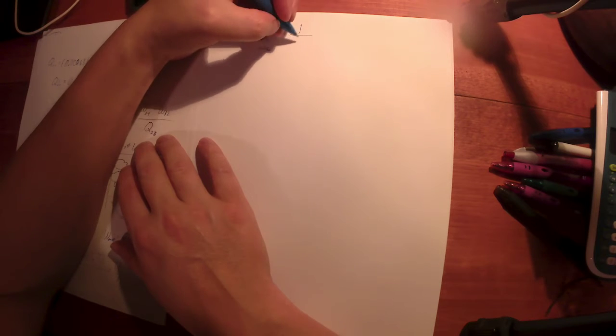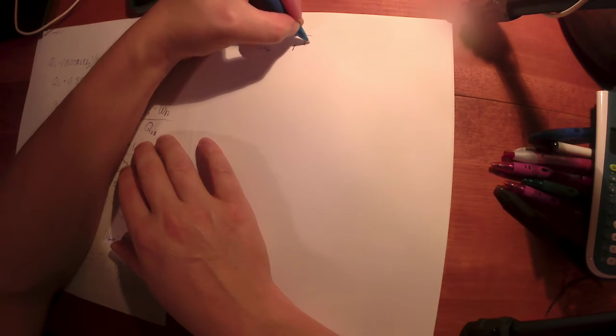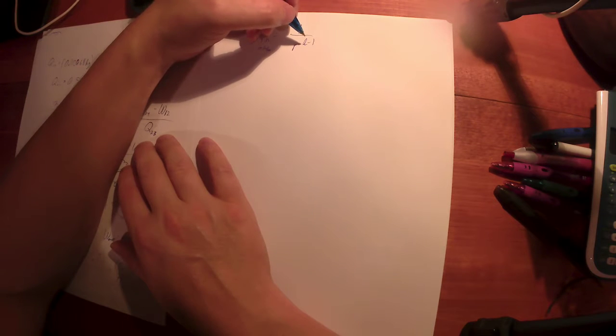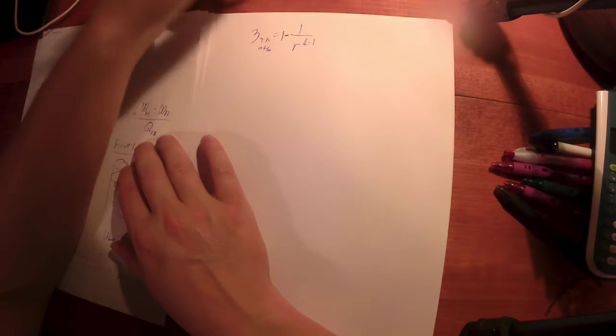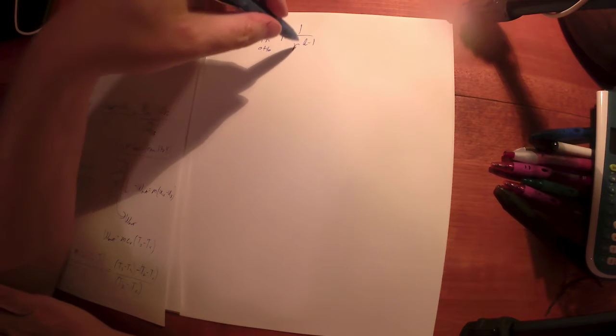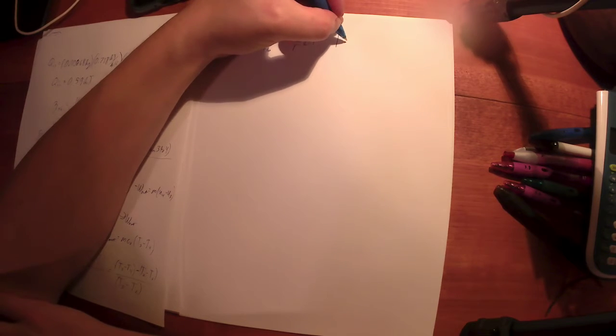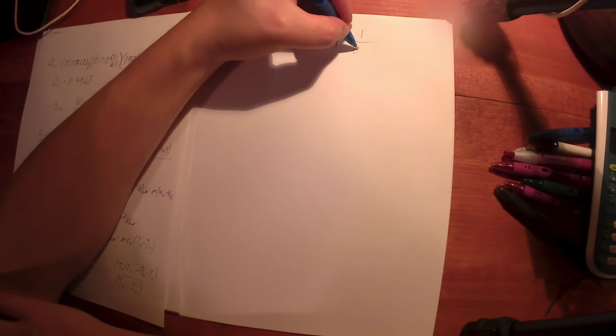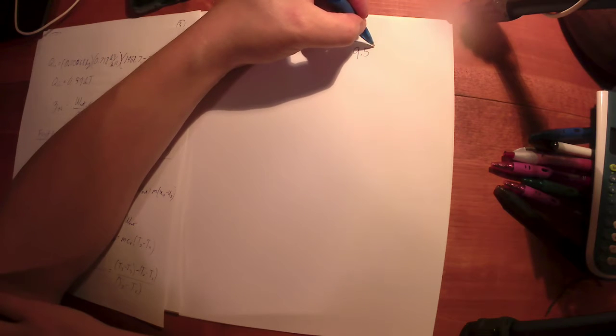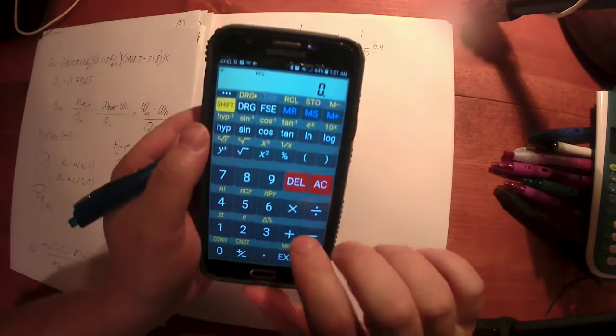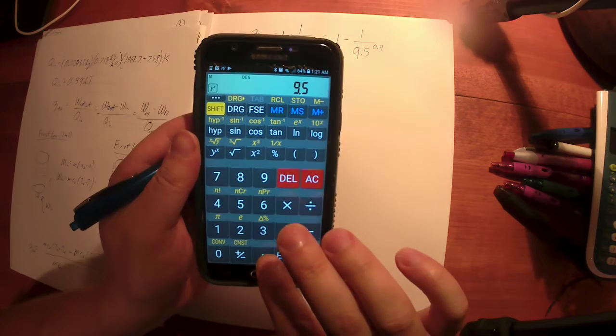Specifically for an Otto cycle, it is one minus this fraction. I apologize, scribble it out if you need to. One minus one over R to the K minus one. Now we know our R value. Our R value, that's one over nine point five, and the K minus one, that's one point four minus one, that's to the power of zero point four. So nine point five raised to the power of point four.